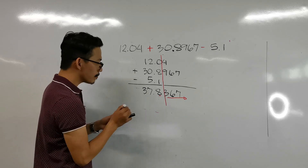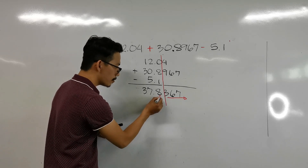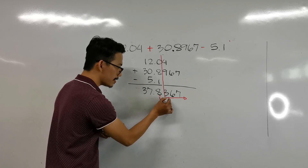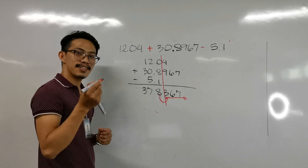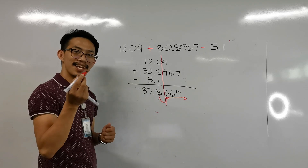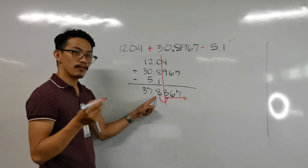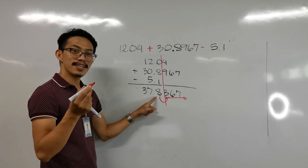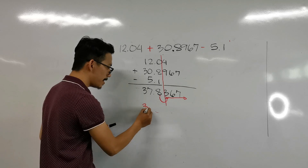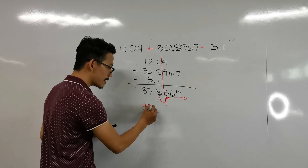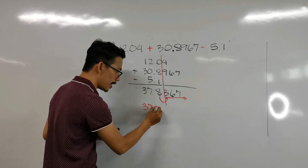Take note of the next number after 8, which is 3. Since 3 is less than 5, that means the 8 must be retained. So our final answer is 37.8.